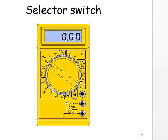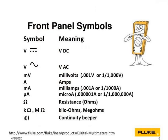By selecting the switch we can select different parameters: voltage, current, or resistance, or we can check continuity. The front panel symbols of the digital multimeter are very simple — voltage, whether DC or AC, is measured in millivolts; current is measured in ampere, milliampere, or microampere. Ranges are given up to which we have to measure voltage and current. Resistance is measured in ohm, kilo ohm, or mega ohm, and there is a continuity beeper — a beep sound when we test continuity.